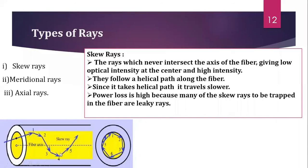The light rays move in a clockwise manner and do not cross the fiber axis. Since it takes a helical path, it travels comparatively slower. The helical path traced through the fiber gives a change in direction of 2γ at each reflection, where γ is the angle between the projection of the ray in two dimensions and the radius of the fiber core at the point of reflection. Skew rays are more difficult to track as they do not lie in a single plane, and they take the maximum possible ray path because of a greater acceptance angle.